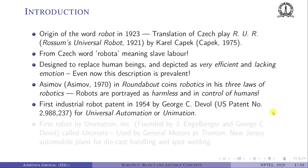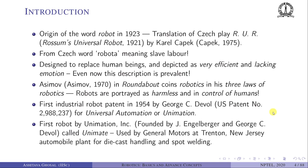The first industrial robot patent was filed in 1954 by George C. Devol — patent number 2,988,237 — and it was called 'Universal Automation.' The first robot was developed by a company called Unimation Inc., founded by Engelberger and Devol, and they called it Unimate. This robot was used in a General Motors plant in Trenton, New Jersey, for handling die-cast material and for spot welding.